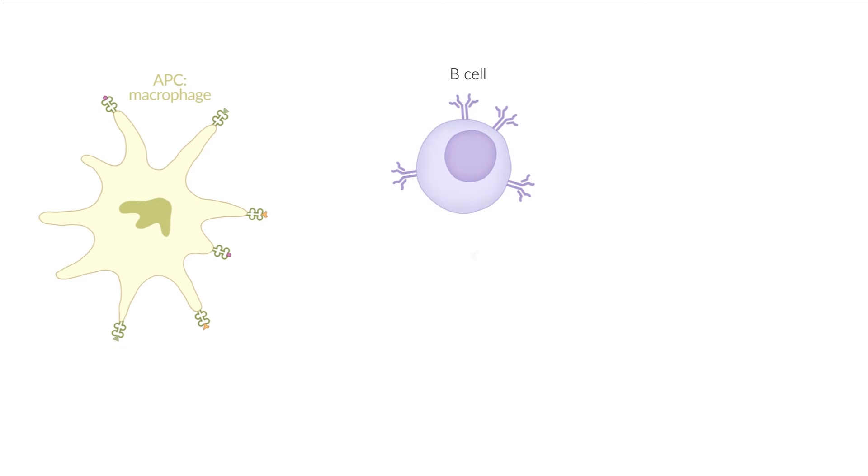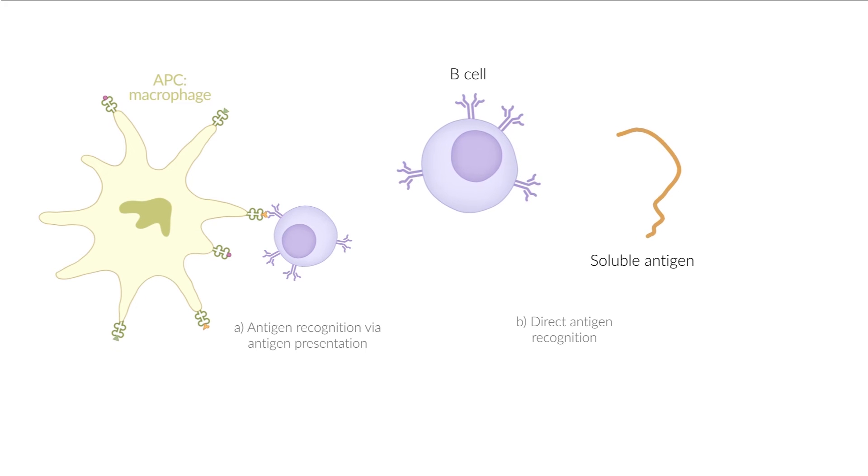Now, on to B cells. These cells can fight off pathogens with antibodies. B cells can recognize antigens in one of two ways. Like T cells, they can detect presented antigens. Also, they can recognize antigens directly without antigen presentation.